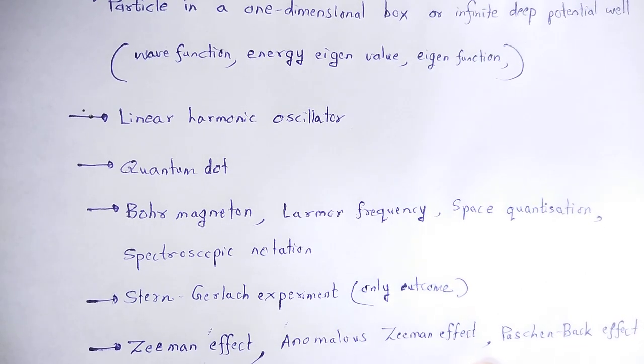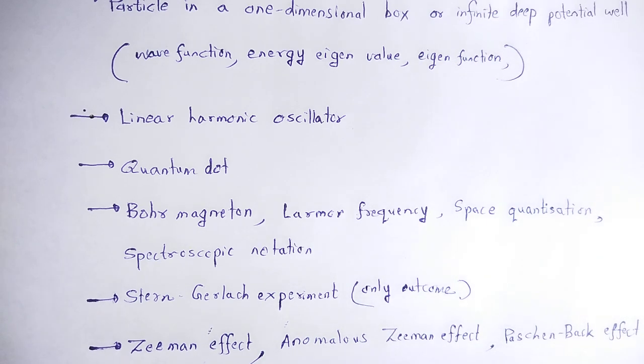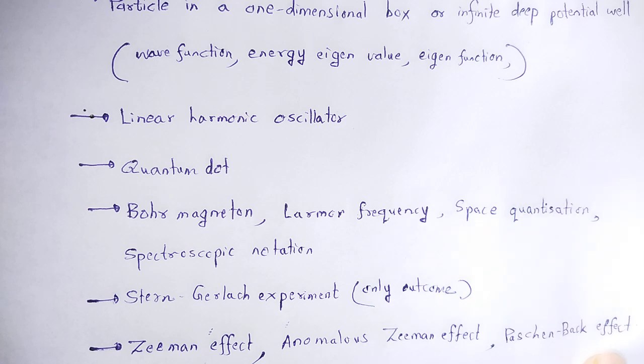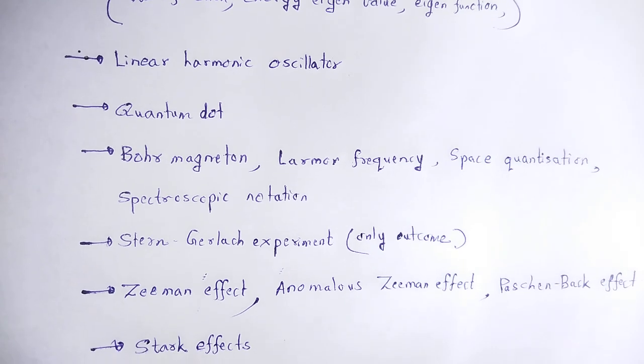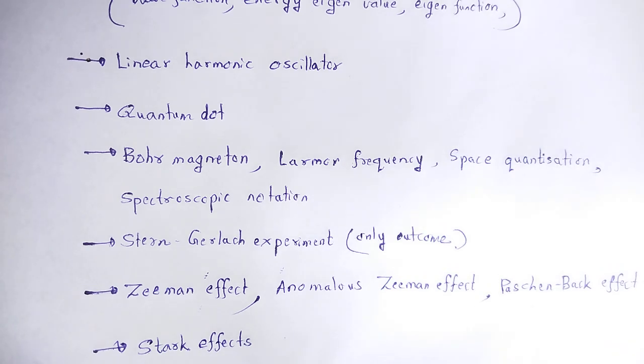The important topics include Zeeman effect, anomalous Zeeman effect, Paschen-Back effect. These relate to how spectral lines split or deviate when an atom is placed in an external magnetic field or strong magnetic field. Next is the Stark effect, where an external electric field causes spectral line splitting.